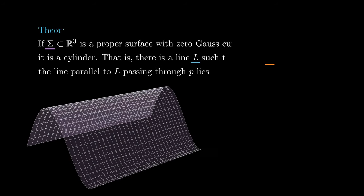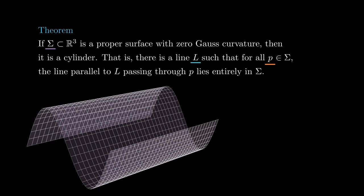Hello everyone! Today we will talk about surfaces with zero Gauss curvature and comparison geometry in general. The main result we will discuss today is the following: if sigma is a proper surface with zero Gauss curvature, then it is a cylinder.